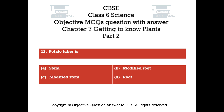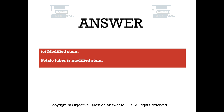Question number twelve. Potato tuber is: Option A stem. Option B modified root. Option C modified stem. Option D root. The right answer is option C — modified stem. Potato tuber is a modified stem.